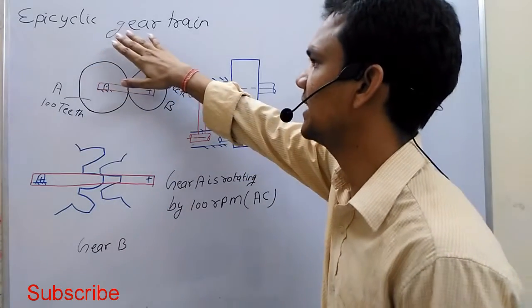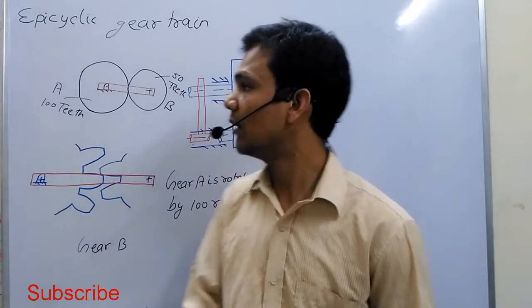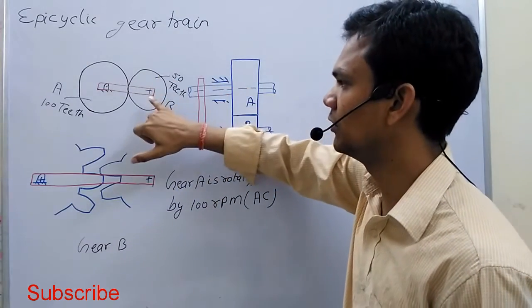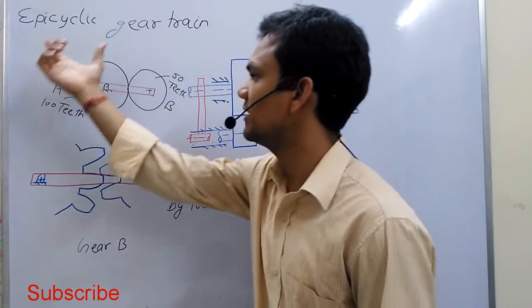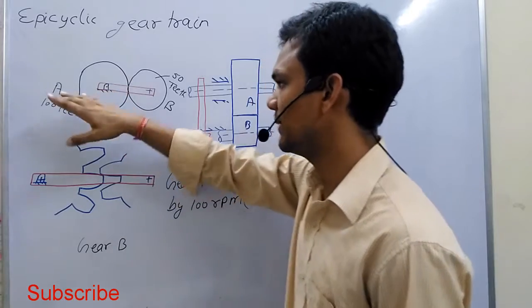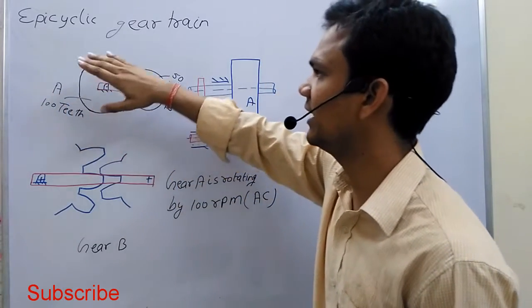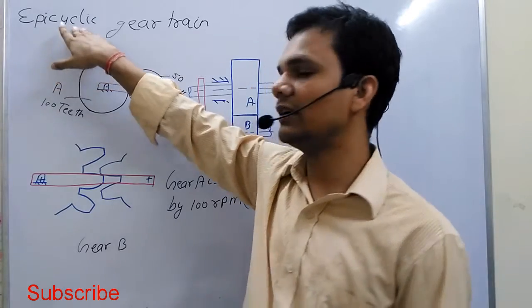Today we discuss epicyclic gear trains. First, the definition: apart from the rotation of the gear, if one of the axes of the gear is also rotating with respect to some other axis, then the gear train is known as an epicyclic or planetary gear train.